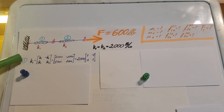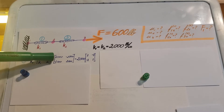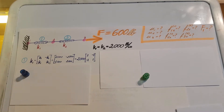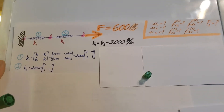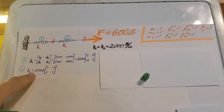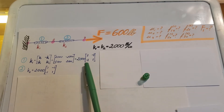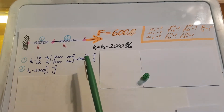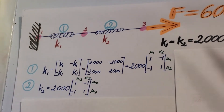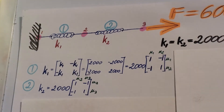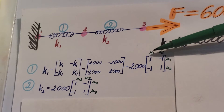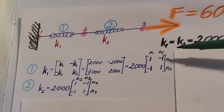For element 1, we're going to write it up. K1 equals the matrix we should remember. We'll fill it in, factoring out the 2000 so it's not so ugly to look at. Now, very important to note that even though K1 and K2 look exactly the same, behind the scenes there is something very important to remember. Element 1 is bordered by nodes 0.1 and 0.2, so I'll mark it U1, U2, U1, U2.